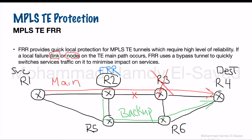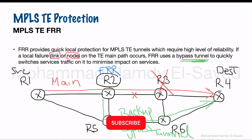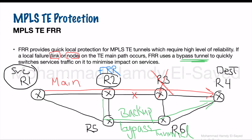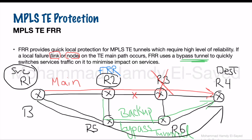The backup traffic engineering tunnel used in FRR is known as a bypass tunnel. This differs from a backup CRLSP such as hot standby or best effort, which is configured at the source node. With hot standby, the source node configures a main path and a backup secondary path — for example, from R1 to R5 to R6 to R4. The source node takes the decision to protect the main path.